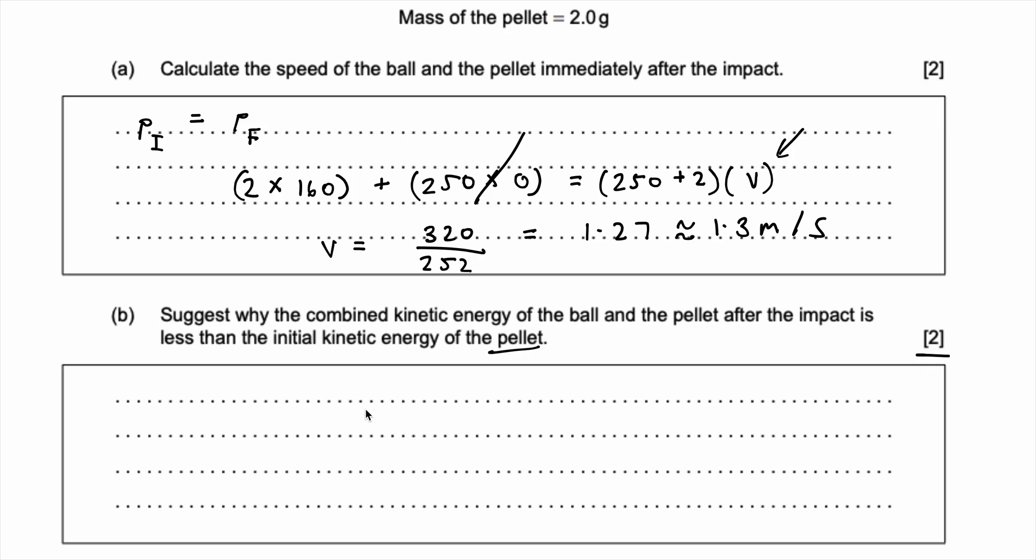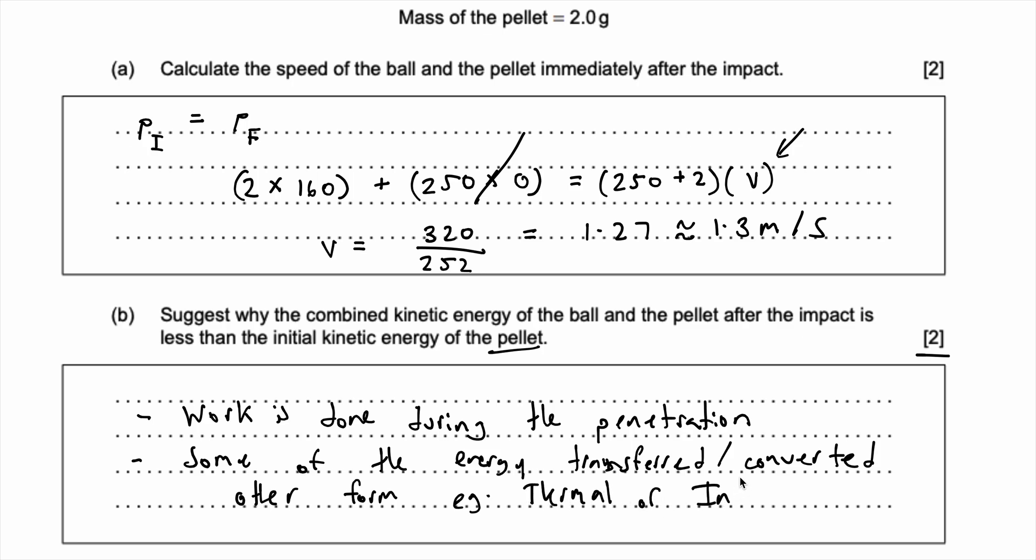So in summary I can write it like this. Two marks means about two points you need to give. So first, the first point is work is done during the penetration. That's the first step. And now the second step is that some of the energy is transferred or converted into another form of energy, such as thermal or internal energy. So that's essentially the two marks you want to be giving for this type of question.